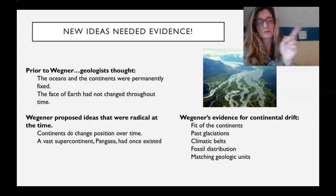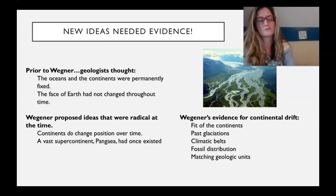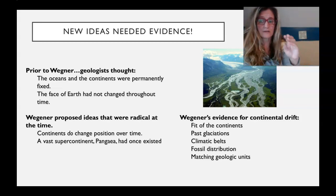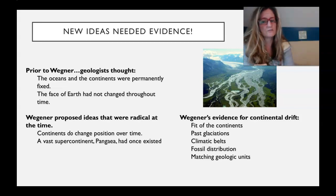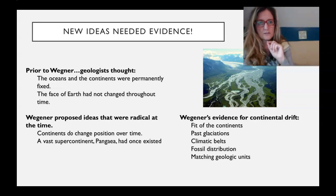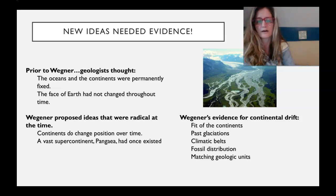Past glaciations matched up over continents. Climate belts showed that deserts were continuous across other continents. Fossils found in some areas were uniquely matched in others. And geologic units — the rocks of the world are not laid out randomly; they can be mapped across areas, and he was able to do that across continents.